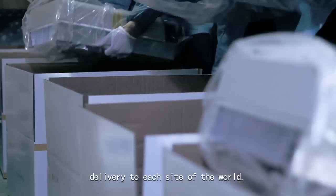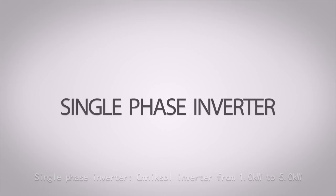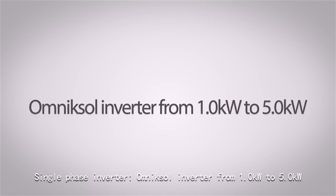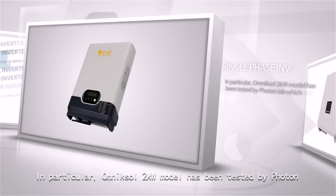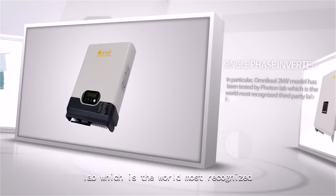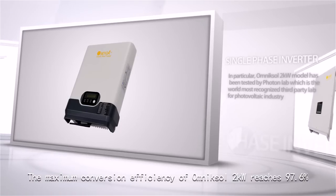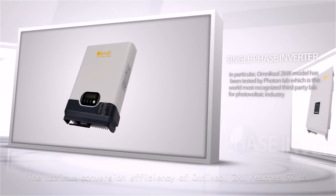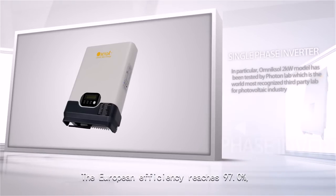Omnic's major products include single-phase Omnic Sol inverters from 1.0 kilowatt to 5.0 kilowatt, applying multiple MPP trackers and no-transformer design. In particular, the Omnic Sol 2-kilowatt model has been tested by Photon Lab, the world's most recognized third-party lab for photovoltaic industry. The maximum conversion efficiency reaches 97.6%, ranking number one for all inverters up to 3 kilowatts tested in this lab. The European efficiency reaches 97.0%, which is 1-2% higher than other inverters in the same range.